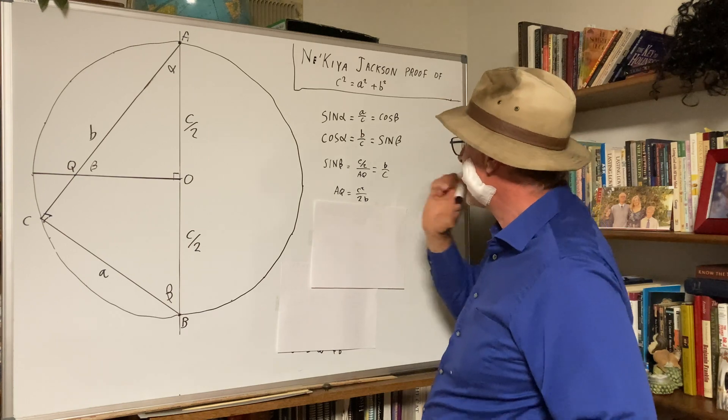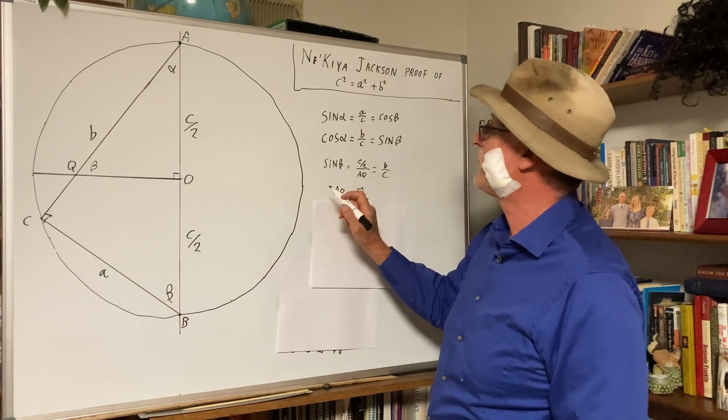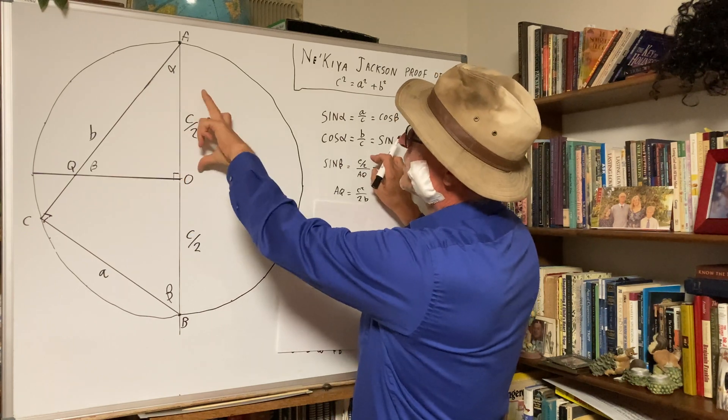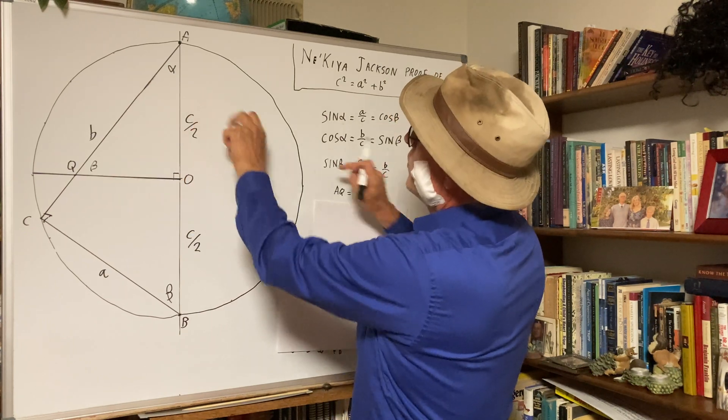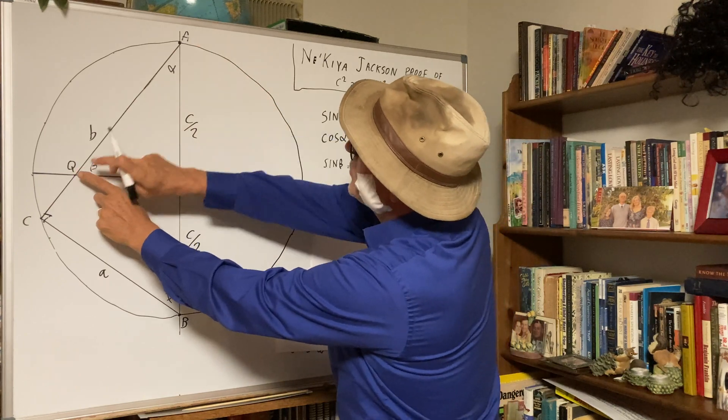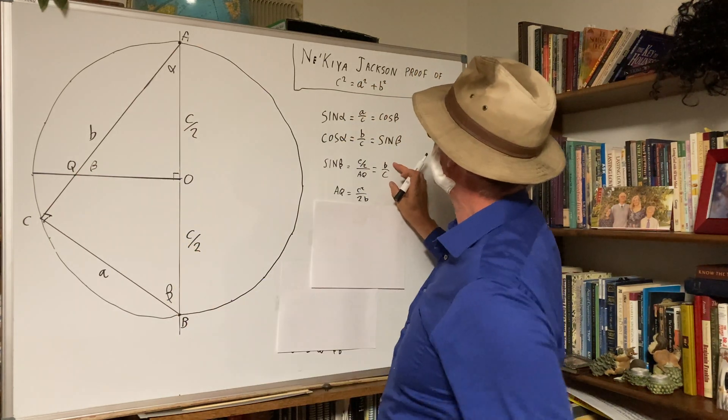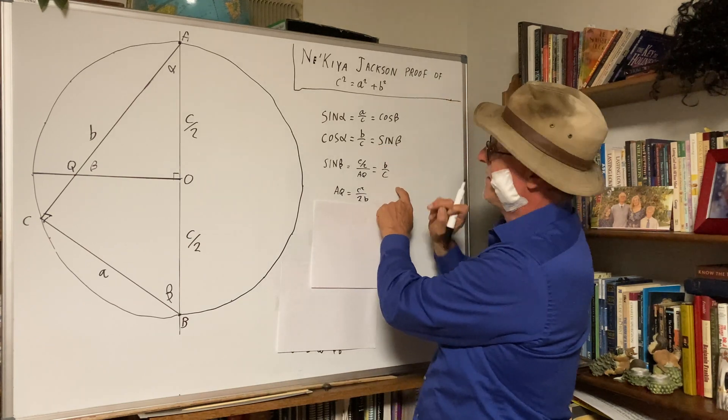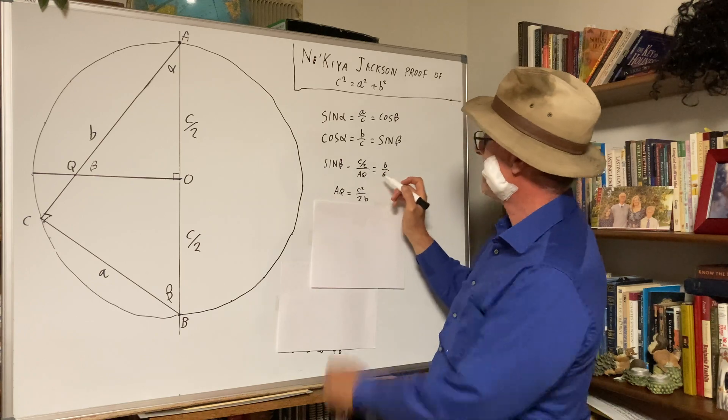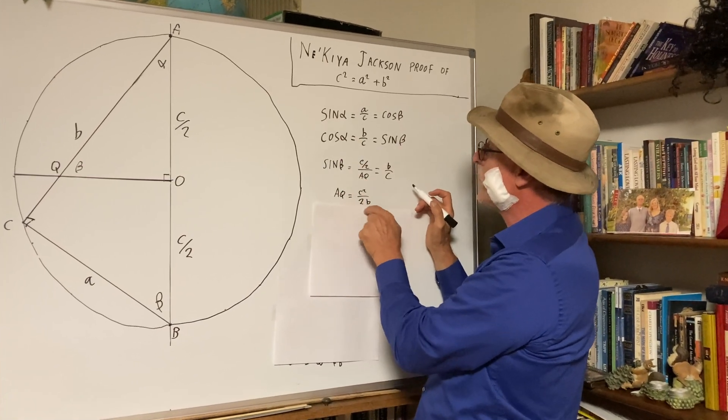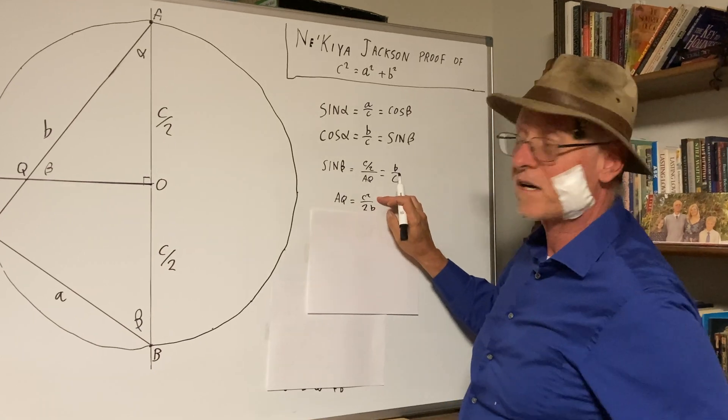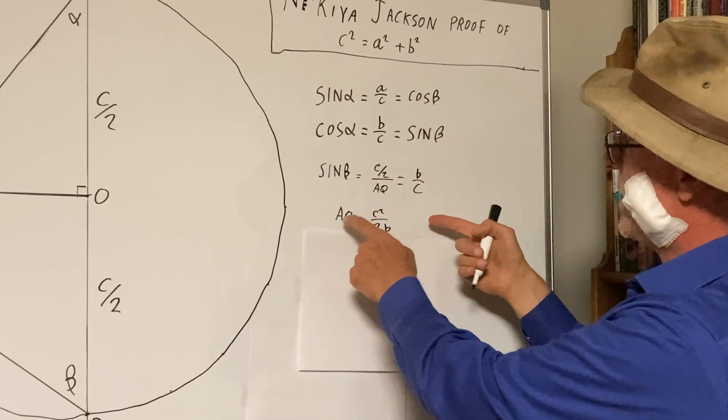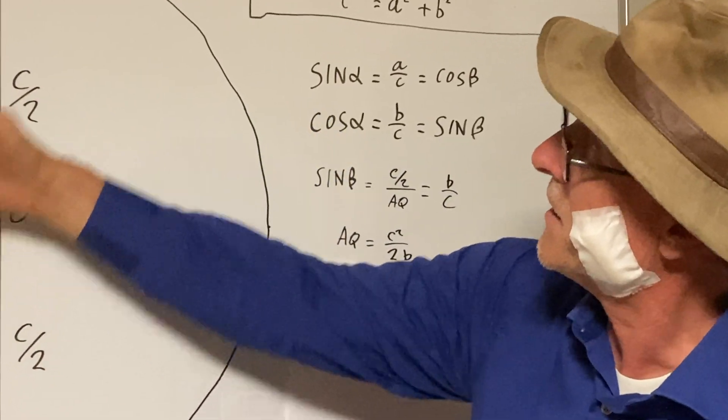So we've got sine of beta. Here's beta. Sine would be C over 2 over AQ. That's this distance here. But that's also B over C. And if we rearrange, AQ is C squared over 2B. Simply rearrange, and you get AQ, this distance here, C squared over 2B.